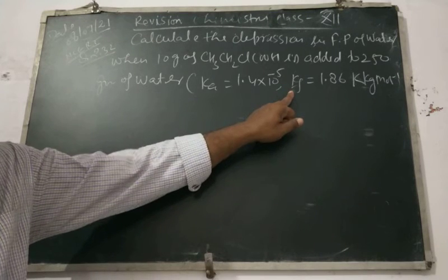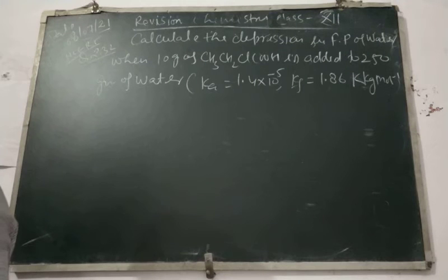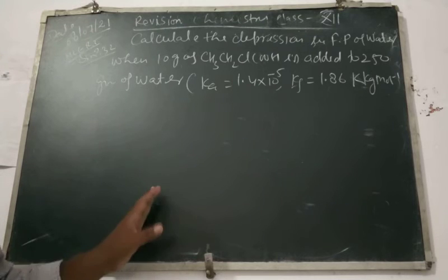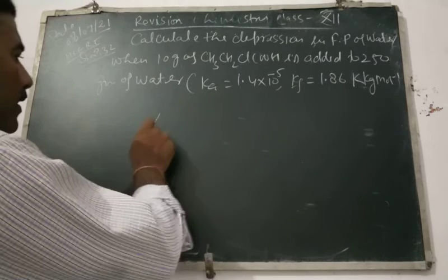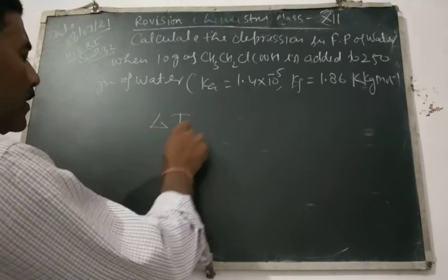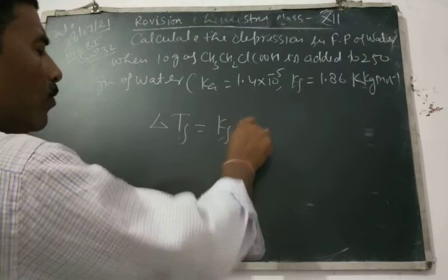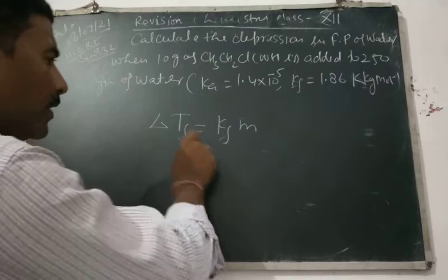Kf is equal to 1.86 Kelvin kg mol⁻¹. To calculate the depression in freezing point, since we know that ΔTf is equal to Kf into molality.